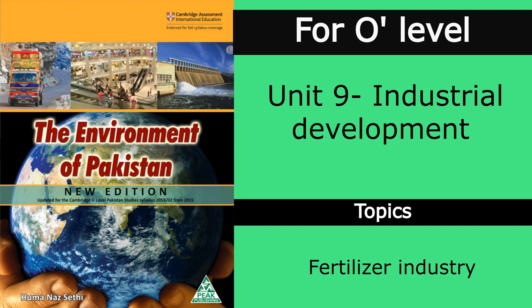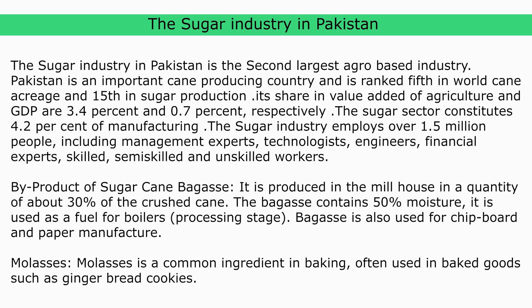Good morning students, this is your geography lesson. As you know, we have started Unit 9: Industrial Development — secondary and tertiary industries. Yesterday we read about principal factory industries in Pakistan, including the cotton textile industry. In today's lesson we will discuss the sugar industry as well as the fertilizer industry.